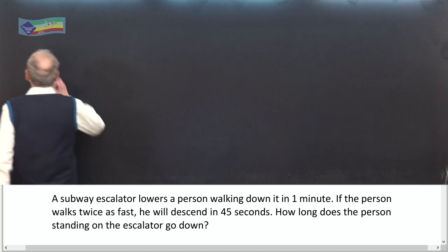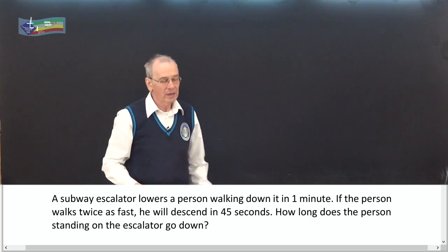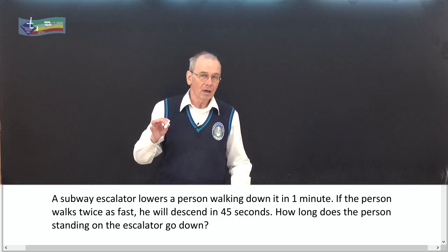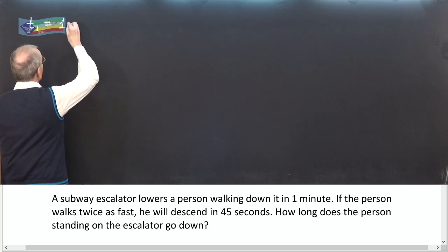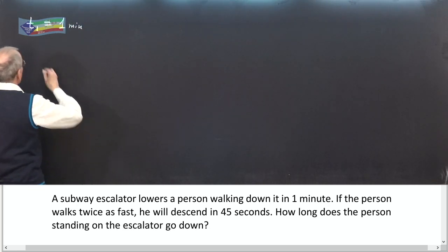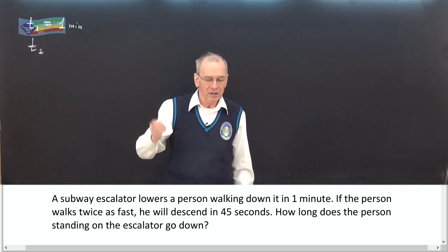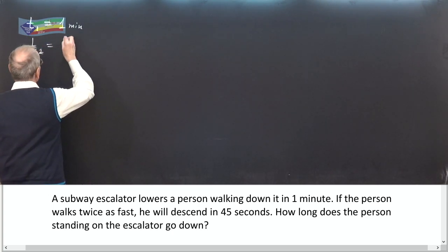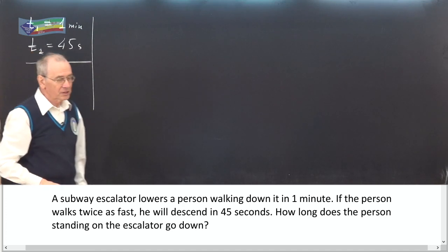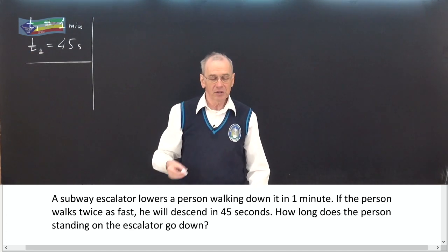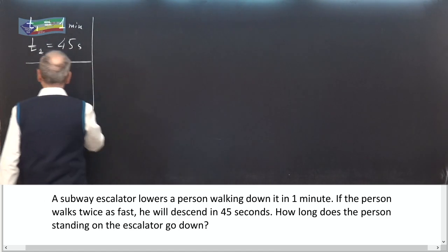Let t1 stand for the case when a person is walking down at normal speed. This time equals one minute. If the person walks twice as fast, this time equals forty-five seconds. We have to find the time when a person is idle, standing on the escalator — t0.